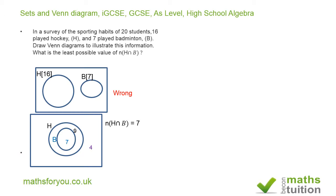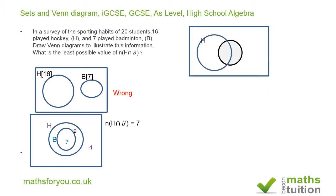In the next diagram, 10 students play just hockey only. Since 16 play hockey in total, 6 must play both hockey and badminton. We know 7 play badminton, and 6 already play both, so just 1 student plays badminton only. Adding 10 + 6 + 1 gives 17, so three students play neither hockey nor badminton.